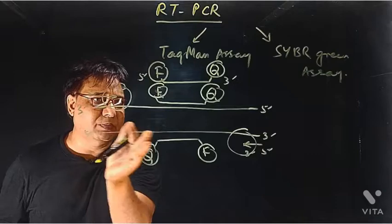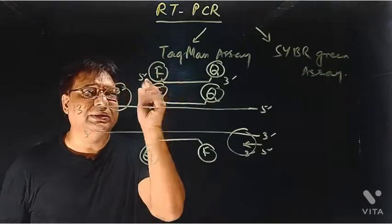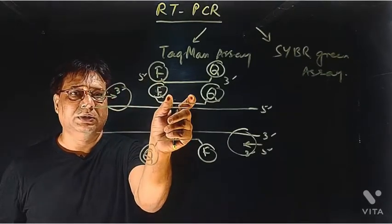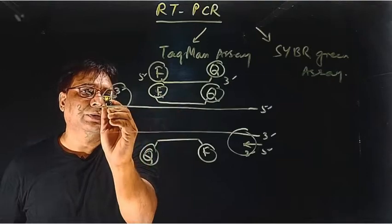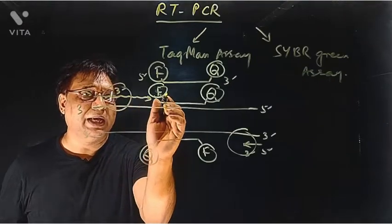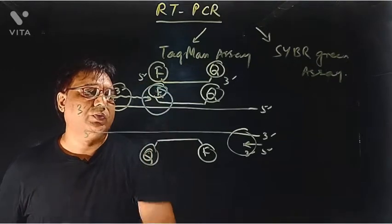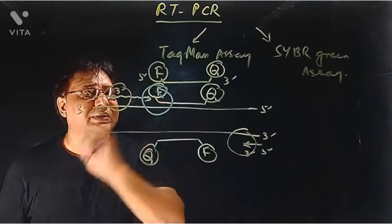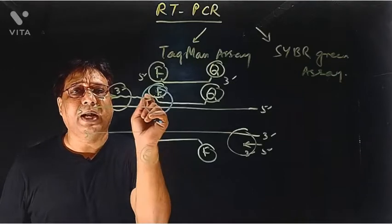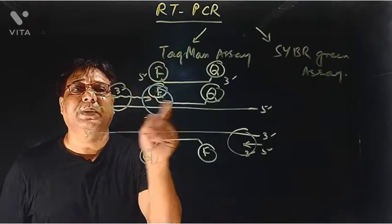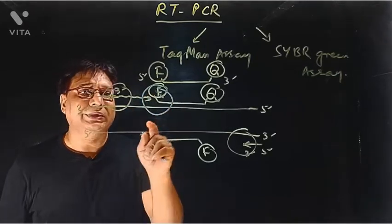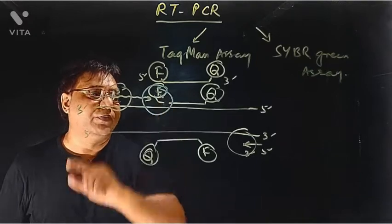When it moves and faces this TaqMan probe, suppose this DNA is being extended and the DNA polymerase has come to this place. What will it do? It will cleave this fluorophore at the 5' end. It has a 5' to 3' exonuclease activity. Using that, it will cleave this fluorophore.